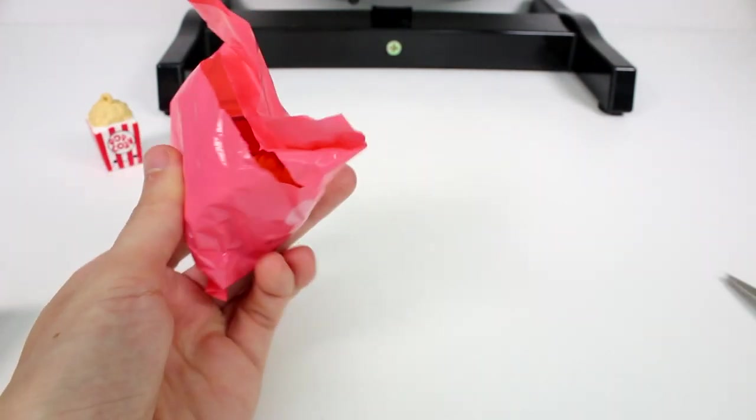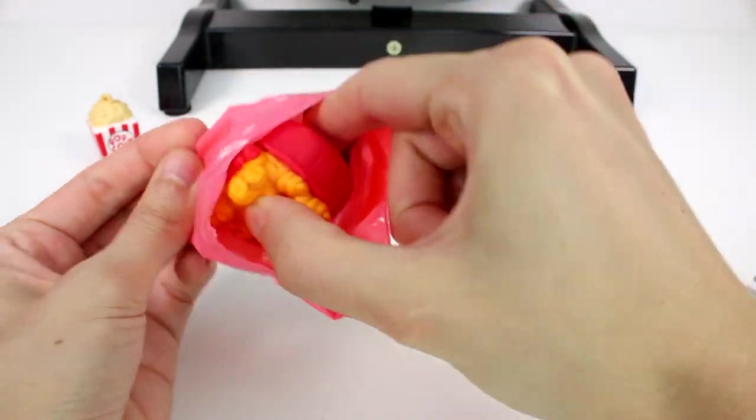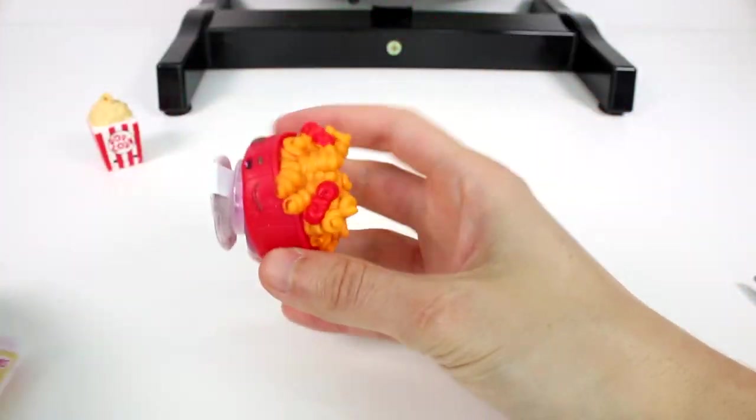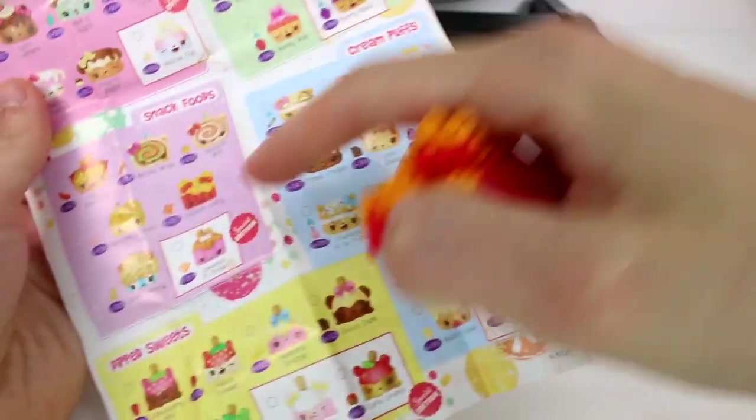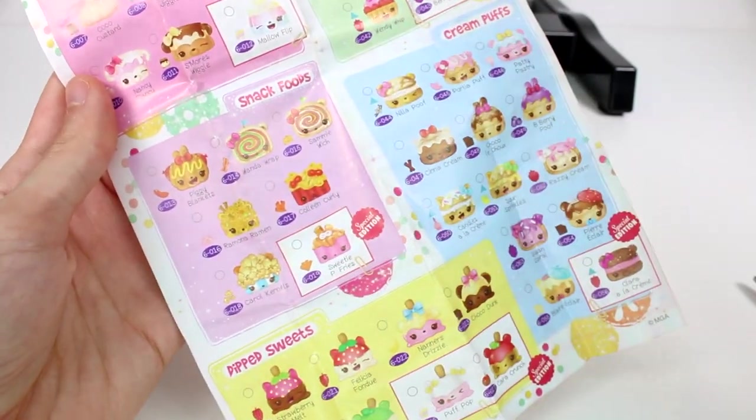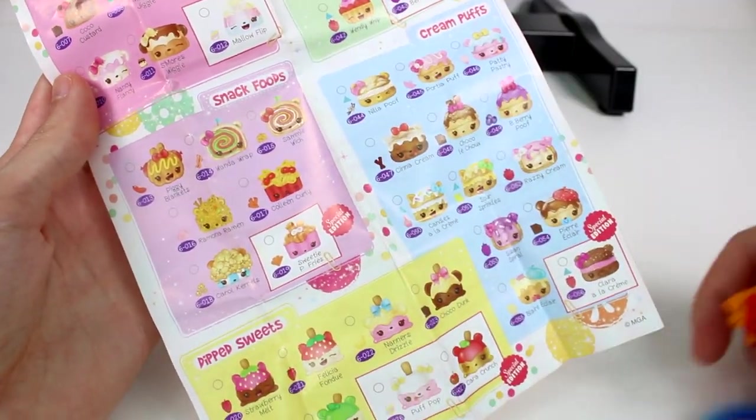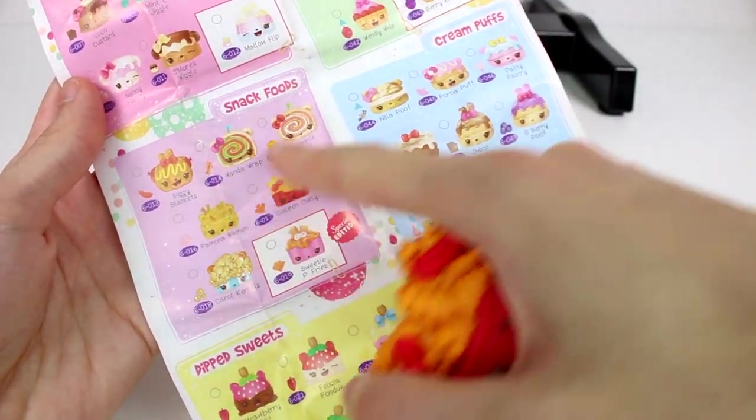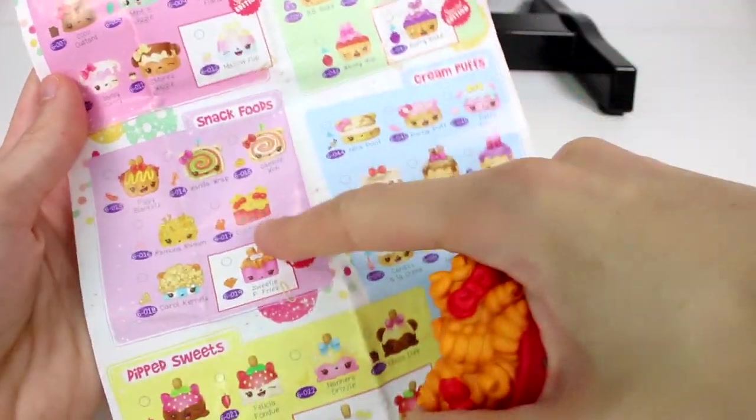Oh I thought I cut the Num Noms on accident. I think I see fries. Are these curly fries? We did get one of the snack foods, my absolute favorite category of this series. I really want one of the wraps. They look so good. And the ramen. Oh my gosh, they all look so good.